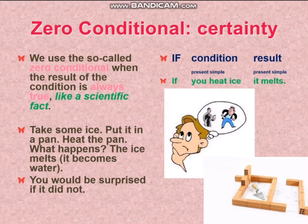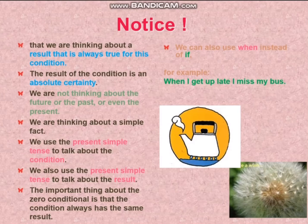So then, the last one — zero conditional. It's about certainty. We use the zero conditional when the result of the condition is always true, like a scientific fact. For example: take some ice, put it in a pan, heat the pan — what happens? The ice melts. It becomes water. You would be surprised if it did not. So it's a kind of formula: if you heat ice, it melts. Notice that we are thinking about a result that is always true for this condition. The result of the condition is absolute certainty. We are not thinking about the future or the past, or even the present — we are thinking about a simple fact. We use the present simple tense to talk about both the condition and the result. The important thing about the zero conditional is that the condition always has the same result. For example: when I get up late, I miss my bus.